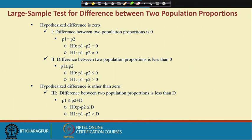The discussion is with respect to two population proportions. We have two different samples and we want to check whether there is a significant difference between two sample proportions. There are altogether three different situations: first, P1 equal to P2; second, P1 less than P2; and third, P1 greater than P2. We will address this problem across three different situations.